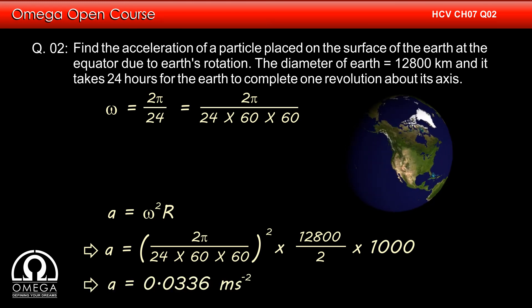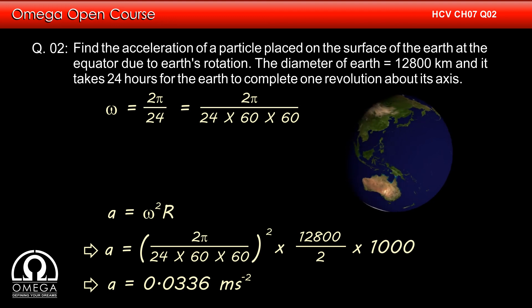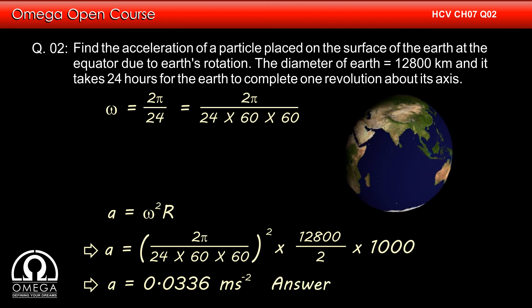Simplifying, we get a = 0.0336 meters per second squared. This is our answer.